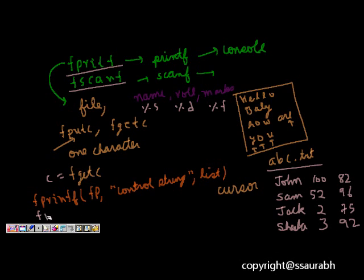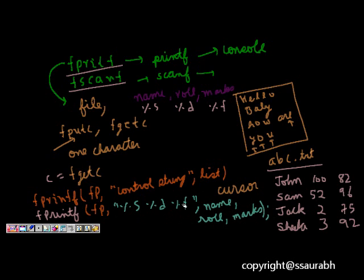So I will say fprintf and then the file fp and then the first name is %s, then the role number is %d and marks is %f and then I will write name, role and marks. So this way I will be writing in the file. And of course name is something like char name[20].